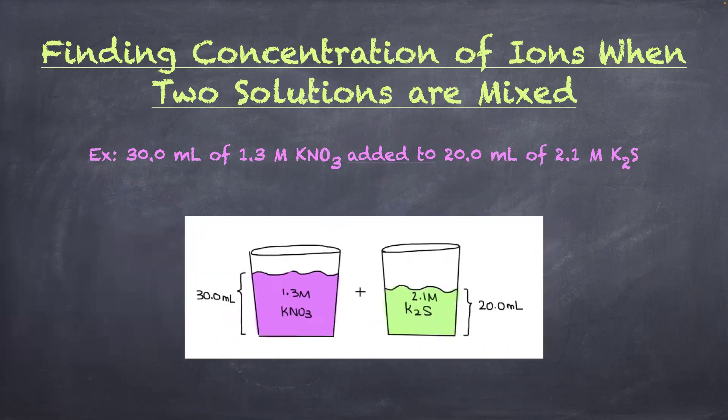So we have two different solutions, two different salts or ionic compounds. Just so you note, KNO₃ and K₂S are considered as salts — salt is another name for ionic compounds. When we mix these two, we want to find how much K⁺ we have, how much NO₃⁻ we have, and how much S²⁻ we have.